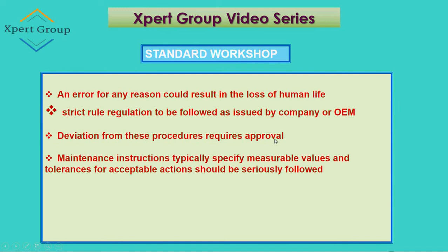Deviation from required procedures requires approval from the OEM, company, or manufacturer. Maintenance instructions typically specify measurable values and tolerances for acceptable actions, which should be seriously followed. The tool or instrument you are using needs to have a maintenance instruction that specifies the required values and limits.